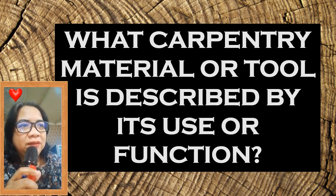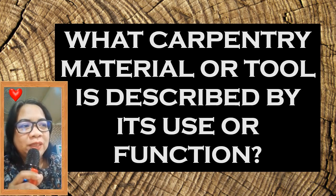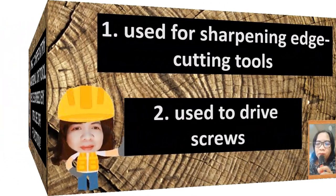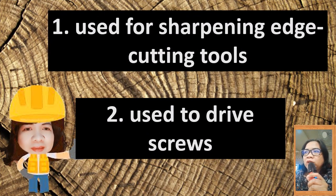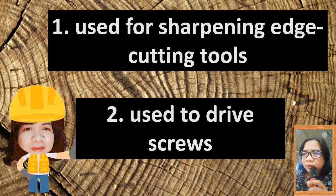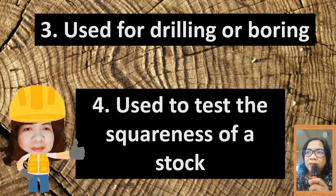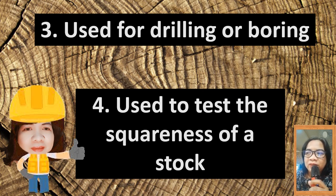Next, what carpentry material or tool is described by its use or function? Number one: used for sharpening edge cutting tools. Number two: used to drive screws. Number three: used for drilling or boring. Number four: used to test the squareness of a stock.